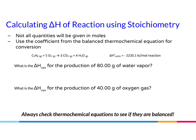Now we calculate delta H of reaction using stoichiometry when quantities are not given in moles. You use dimensional analysis and the coefficient from the balanced thermochemical equation for conversion. Always verify the equation is balanced first. Checking: 3 carbons, 3 carbons; 8 hydrogens, 4 times 2 equals 8 hydrogens; 10 oxygens, 6 plus 4 equals 10 oxygens. The equation is balanced.